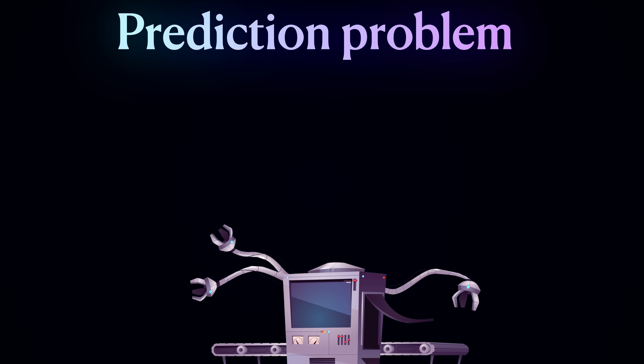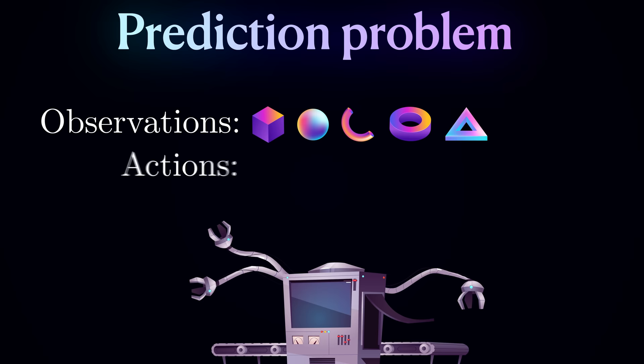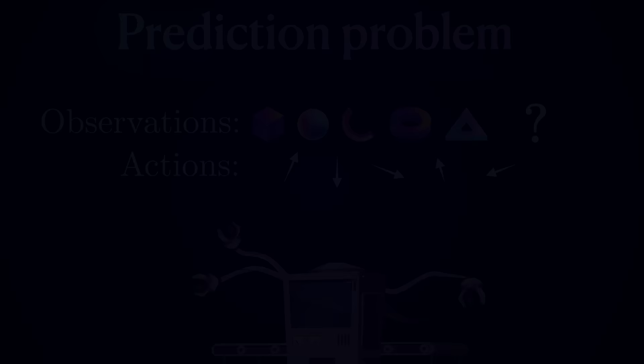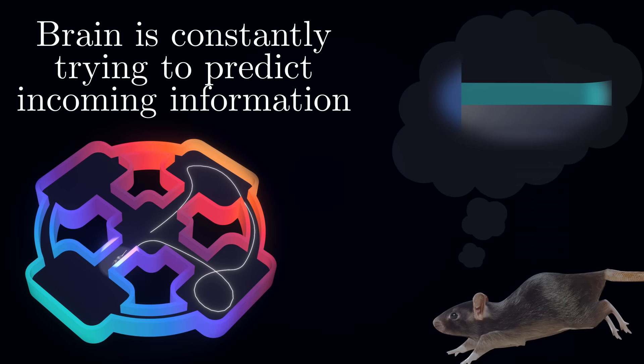To make the task easier for an artificial system, let's formulate it as a prediction problem. Namely, the model will receive a sequence of observations along with the sequence of actions that led to them, and learn to correctly predict the next observation in the sequence. This actually makes a lot of sense biologically. There is a great deal of data suggesting that the main purpose of the brain may be to predict the incoming stimuli and try to minimize the prediction error — a theory called predictive coding.